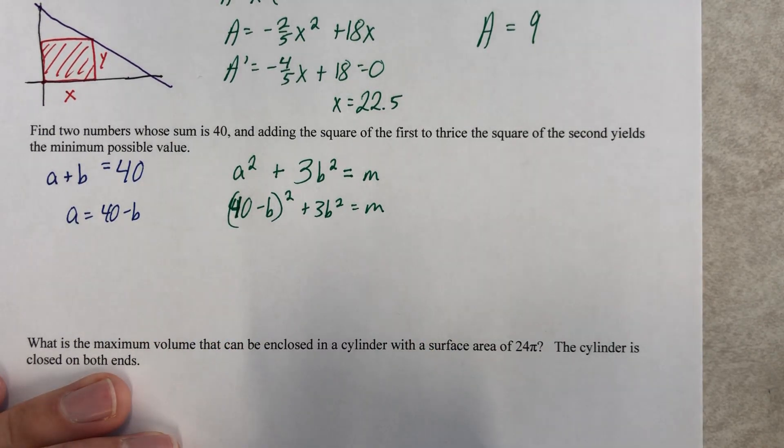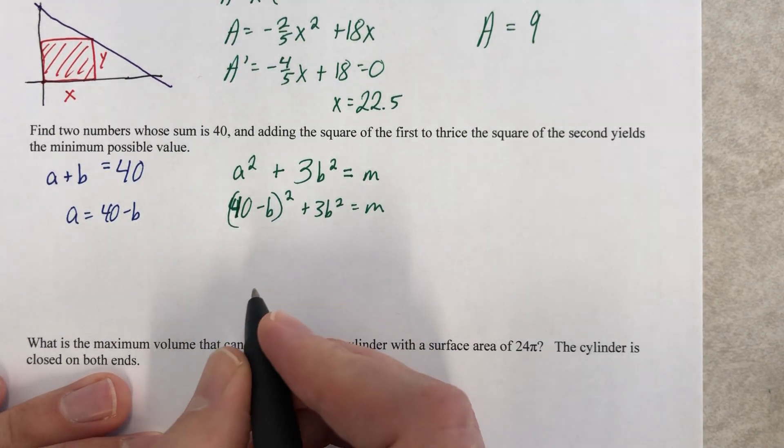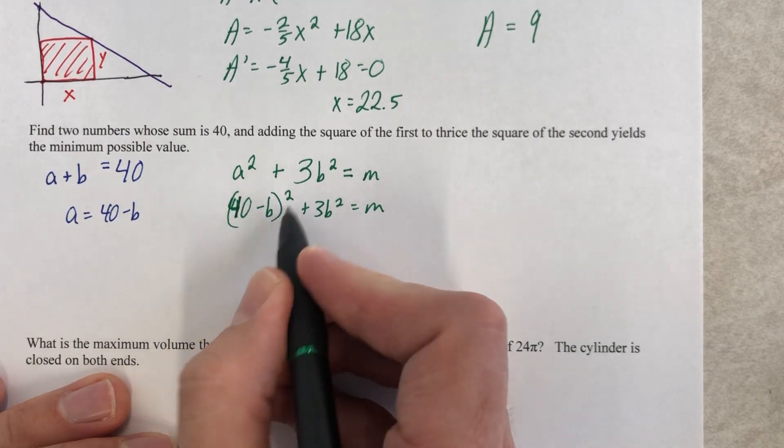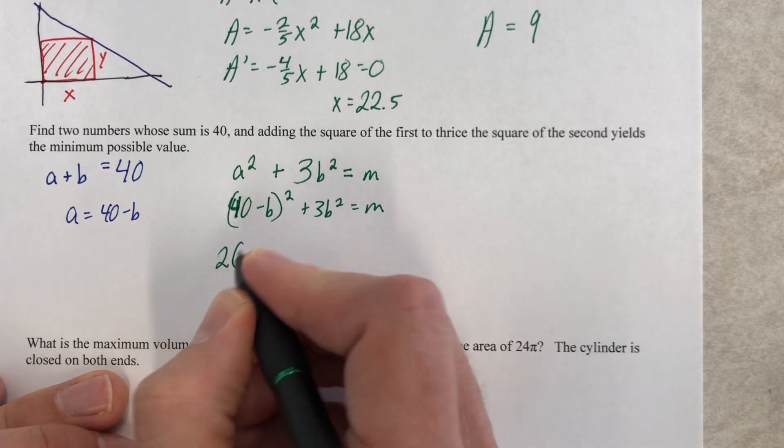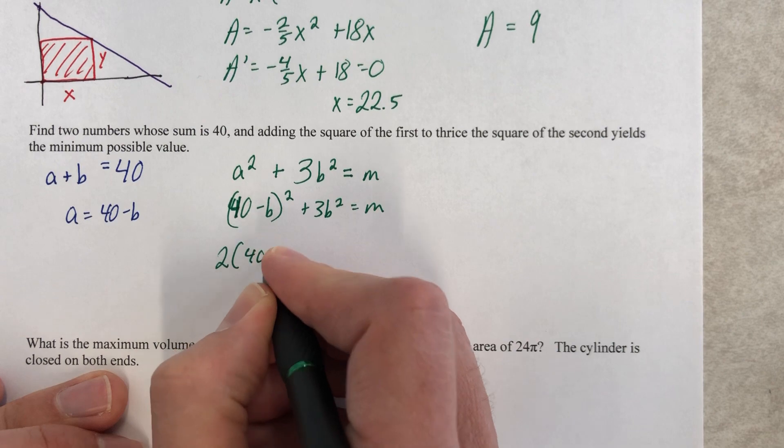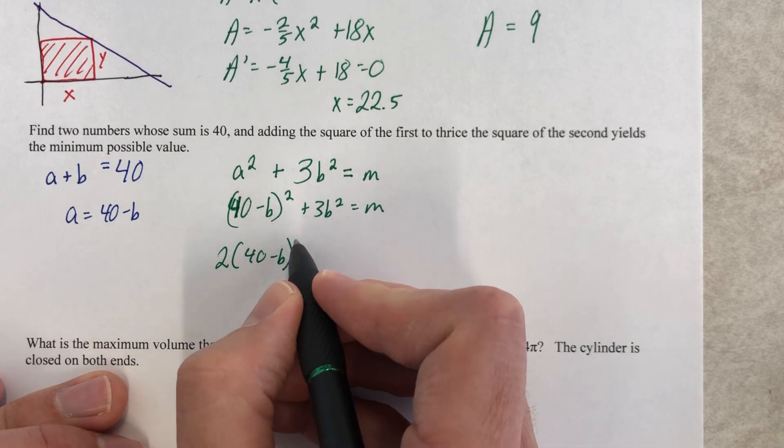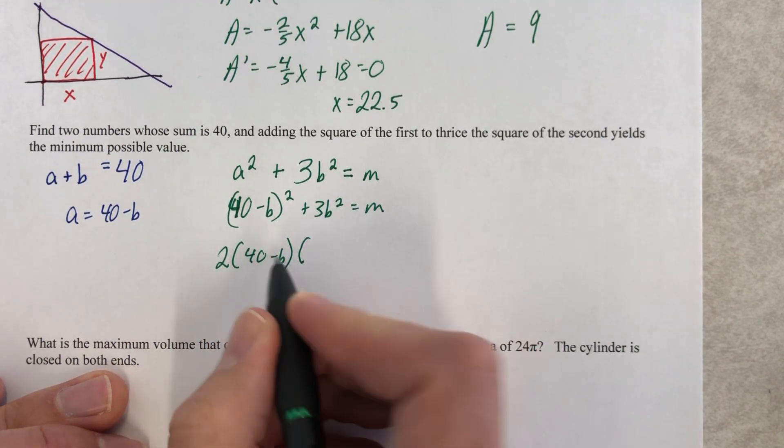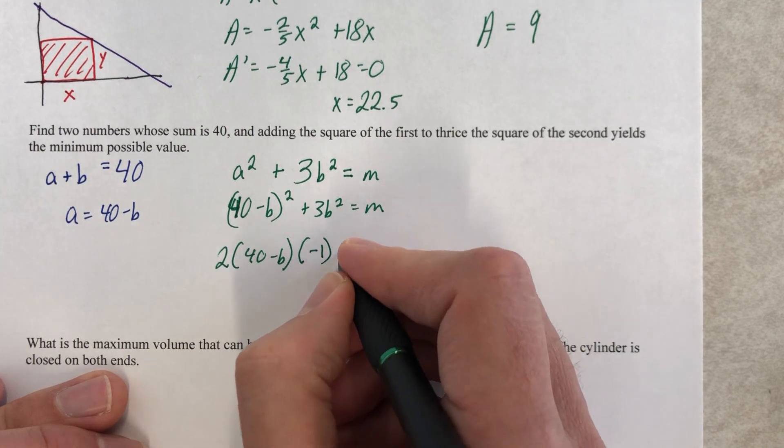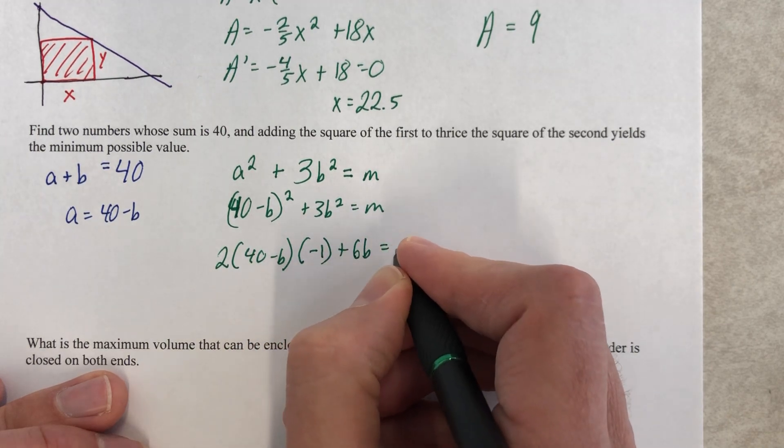Do you want to foil that out? You could if you want to. I choose not to. Instead, I'm gonna just take the derivative of that using the chain rule. So 2 times this inner part, so 40 minus B to the first, and then we multiply by the derivative of that inner part, which is negative 1, and then plus 6B, and that's equal to M.